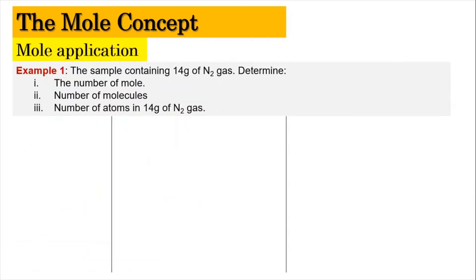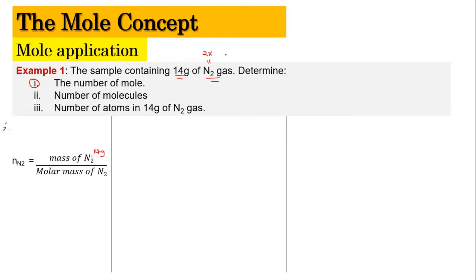Let us look into the examples. For example number 1, we have a sample containing 14 g of nitrogen gas. First, we need to determine the number of moles. We know that we are given the mass, so: number of mole = mass of nitrogen gas divided by molar mass of nitrogen gas. The mass of nitrogen is 14 g as given. The molar mass is 2 times 14 g per mole. So 14 divided by (2 × 14) gives us 0.5 mole.